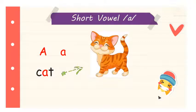Here we have a cat. Let's spell the word together: K, A, T — CAT. Let's say it one more time: K, A, T. Can you hear the short A sound in the word CAT? K, A, T — CAT. Let's move on.